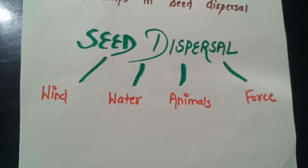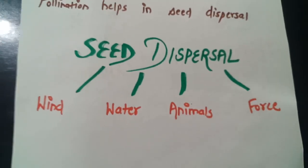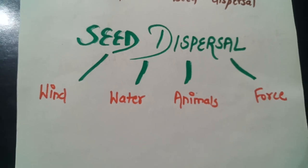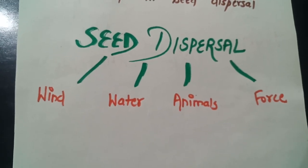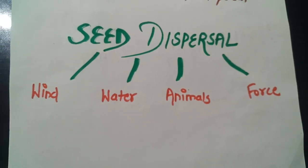When seeds are carried away by wind, it is known as dispersal by wind. For example, dandelion seeds. When seeds are carried away by water, it is known as dispersal by water. For example, coconut.